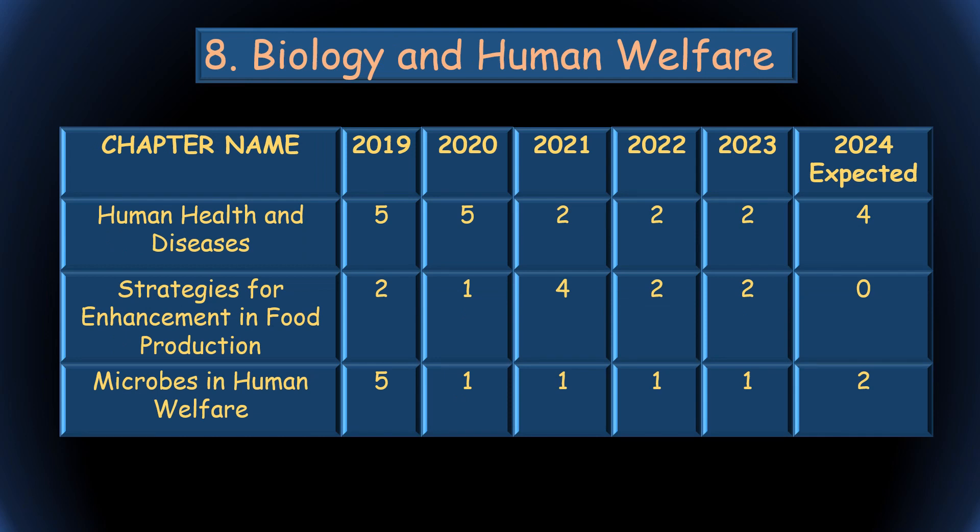The eighth unit — Biology and Human Welfare — earlier had three chapters, but Strategies for Enhancement in Food Production has been deleted. So there are now two chapters: Human Health and Disease, from which four questions are expected, and Microbes in Human Welfare, from which two questions can be expected.